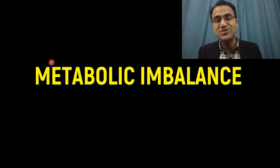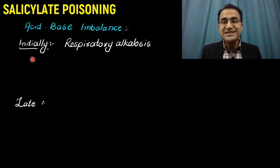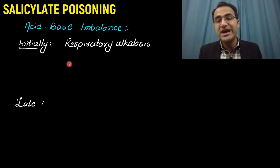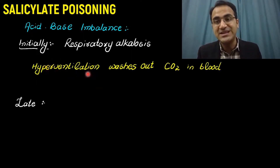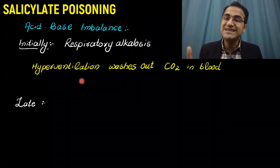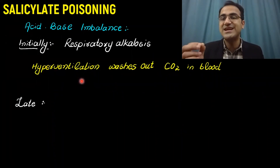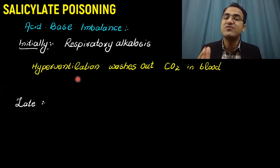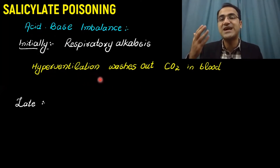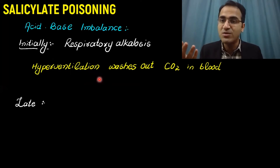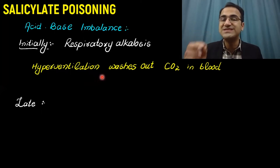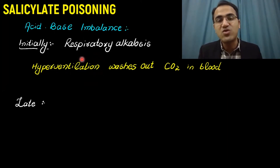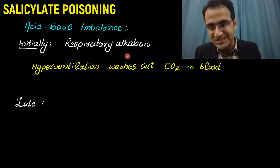Metabolic imbalances caused by salicylates depend on the timing of ingestion. Initially, there is respiratory alkalosis. This occurs because salicylate poisoning causes hyperventilation and increased respiratory drive, which washes out carbon dioxide from the blood. Since carbon dioxide is an acid, its removal results in alkalosis — hence, respiratory alkalosis.